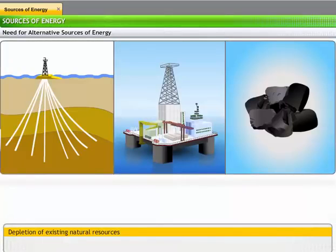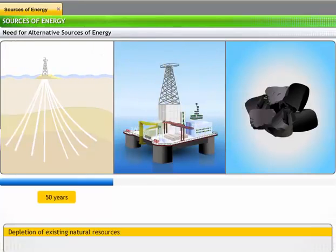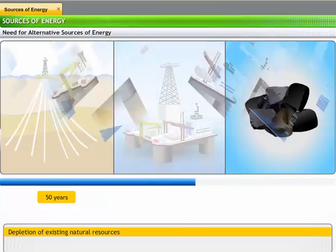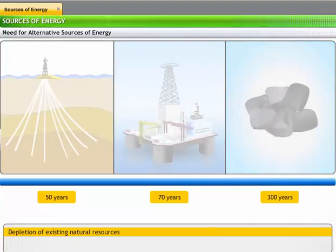Scientific data shows that we may run out of natural gas in the next 50 years. All unknown sources of oil are likely to last us only for another 70 years. The coal reserves around the world may be used up in the next 300 years.